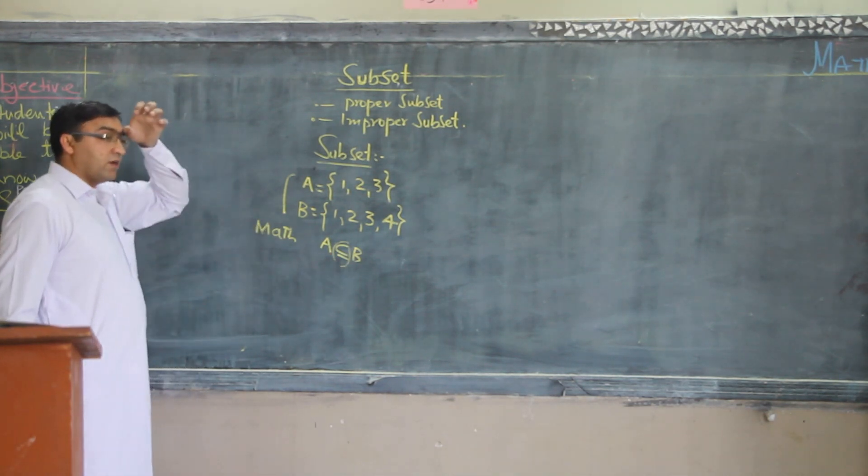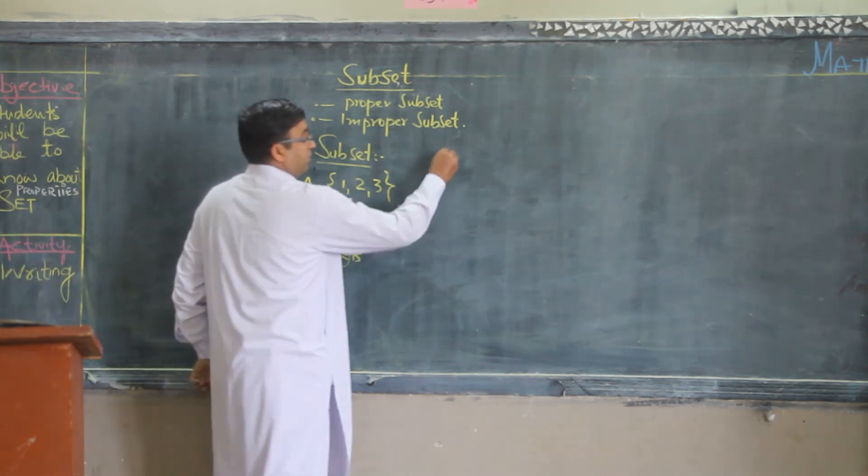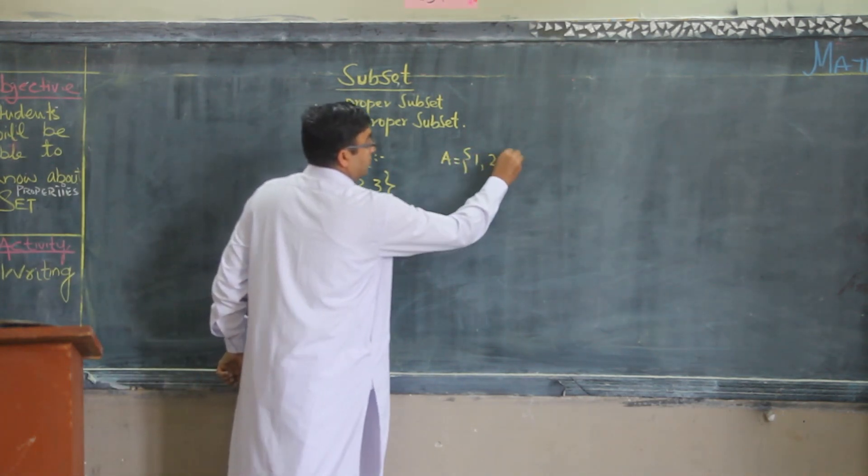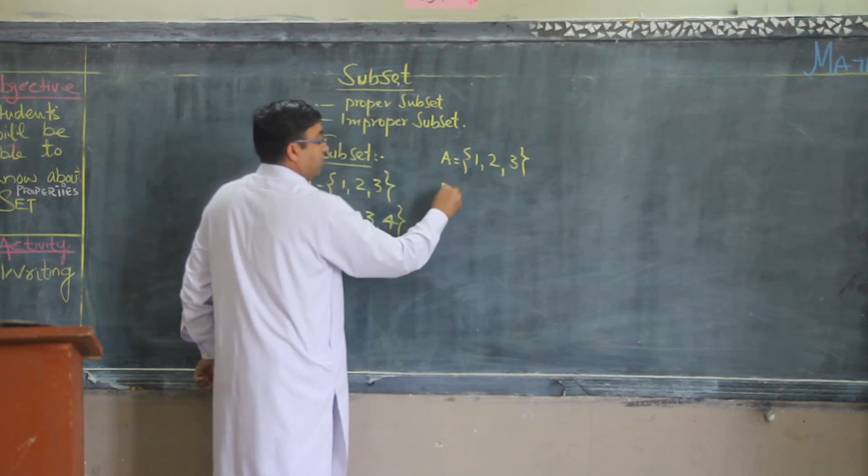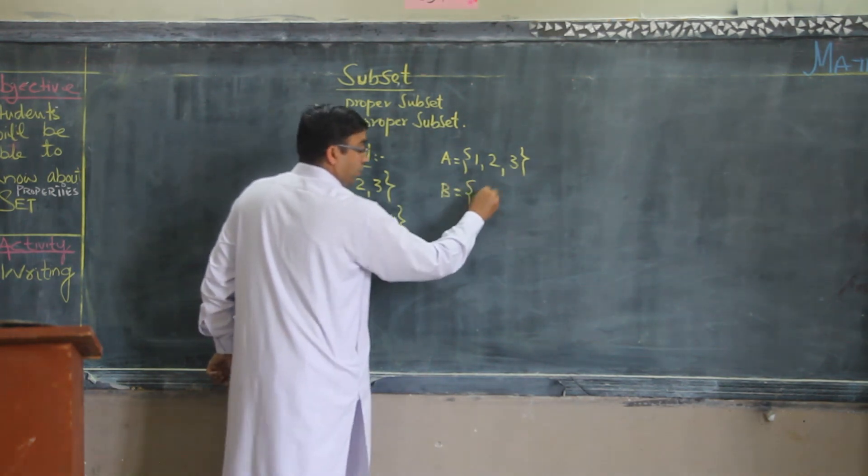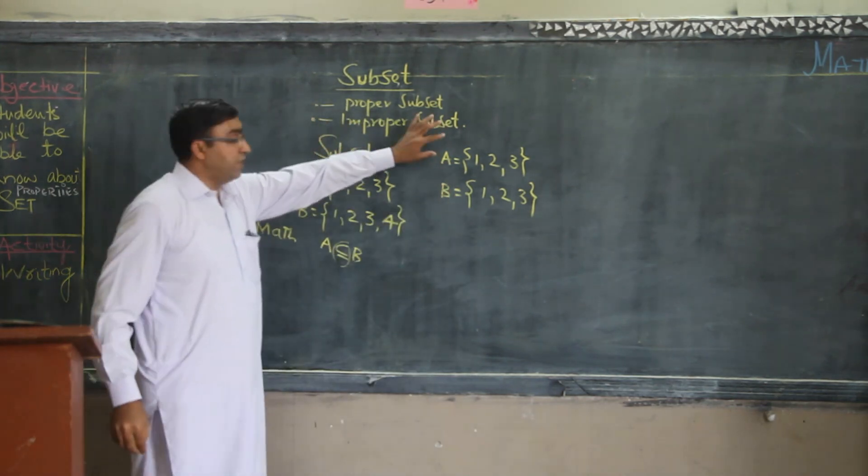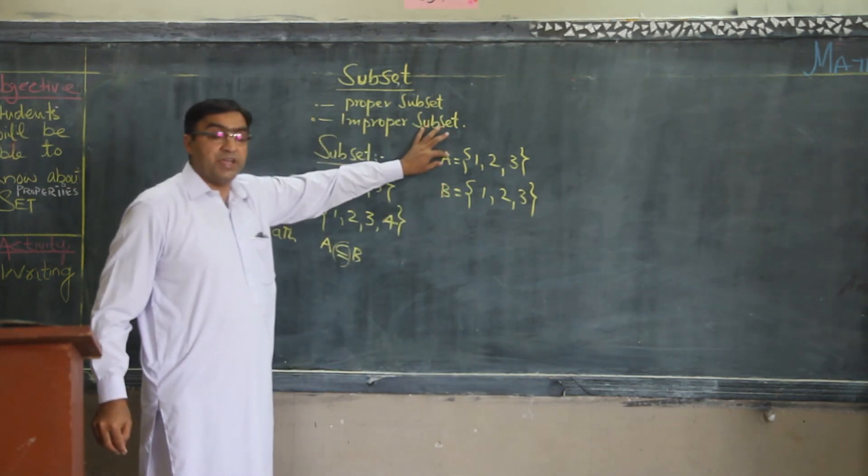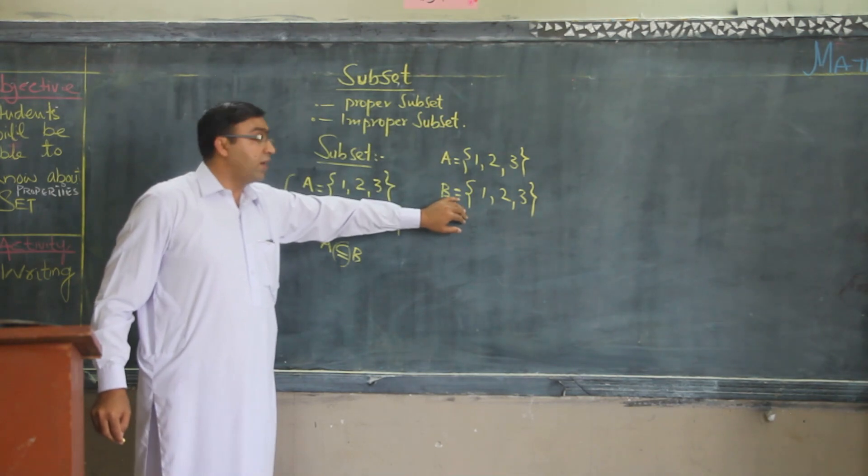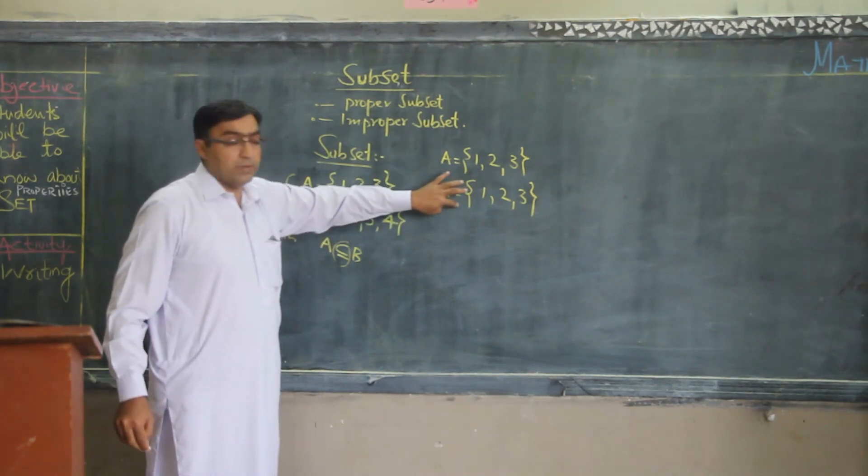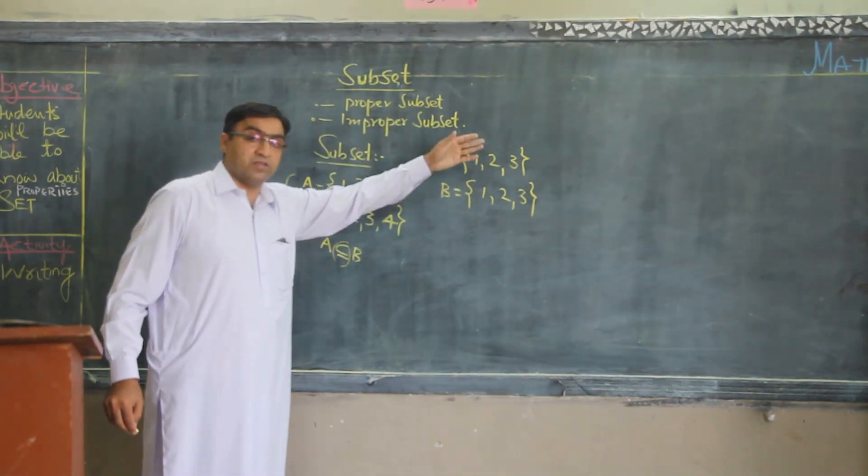Sometimes, if A is equal to 1, 2, 3 and B is equal to 1, 2, 3, now all the elements of set A exist in set B and similarly, all the elements of set B also exist in set A.